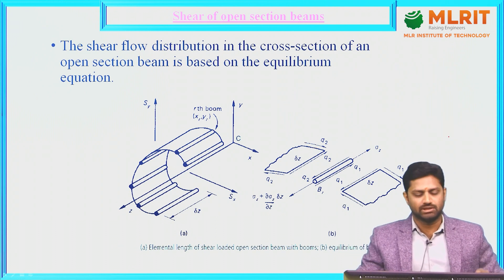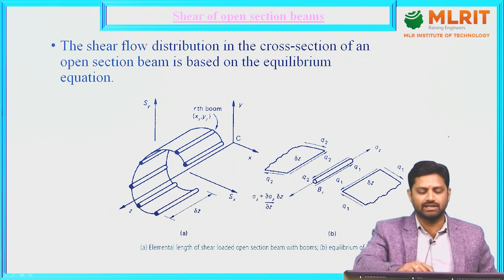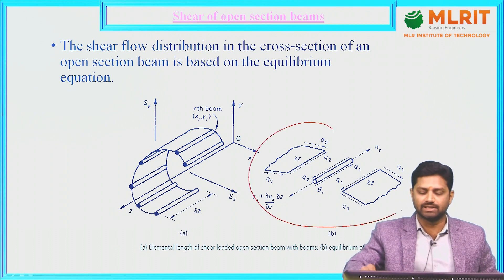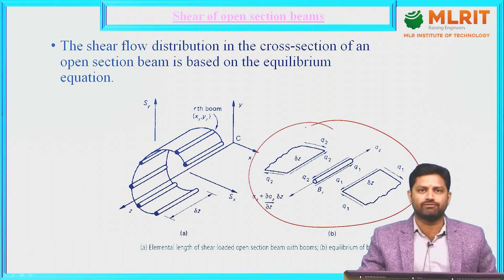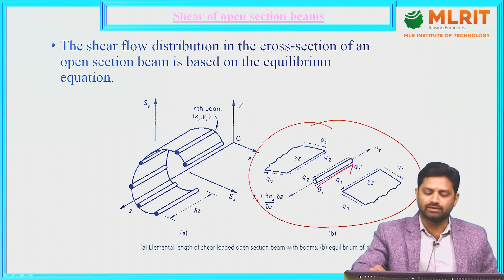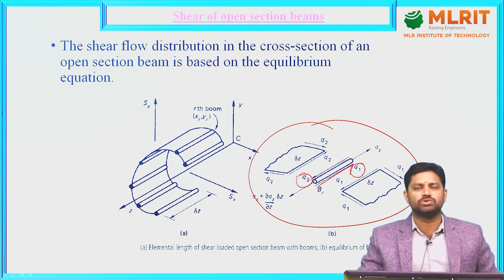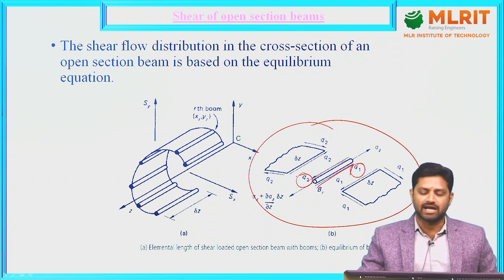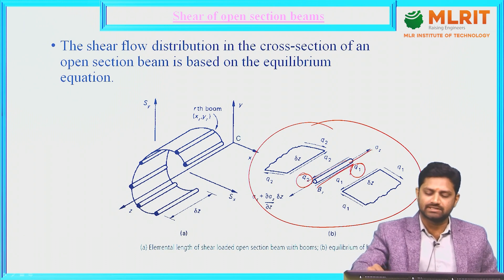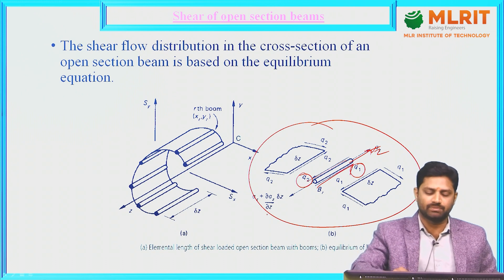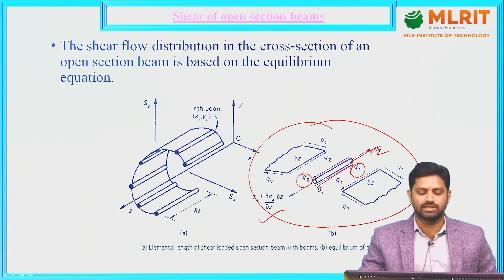Let us take such a panel, such a concentration of area, and represent the shear flows acting in this particular diagram. Let us consider q1 is the shear flow on one side and q2 is the shear flow on the other side. These two shear flows act tangentially on the surface of the boom. Also, σz is the direct stress acting, and on the other end σz + (∂σz/∂z)·δz is the incremental stress.